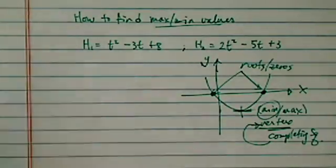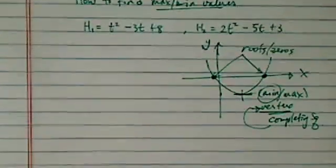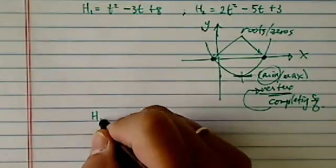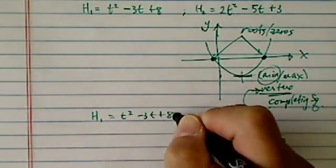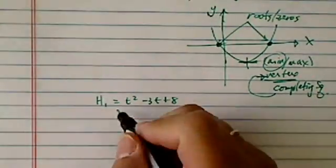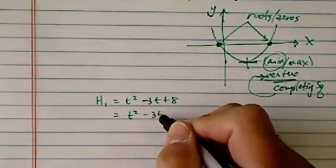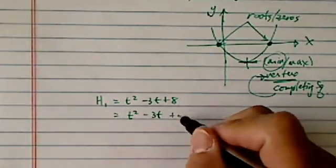Now since here we are looking for max and min, of course we are going to be completing squares. So let's take the first one. Equal to t squared minus 3t plus 8. Now completing squares is actually one of my favorite ones, because if you really think about it, it is a pretty nifty trick.